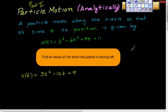All right, so here's the last part of this particle motion analytically. The particle moves along the x-axis so that at time t, its position is given by this function. We already found the velocity function, right? We took the first derivative of this and found that this is velocity.